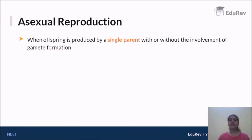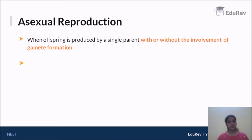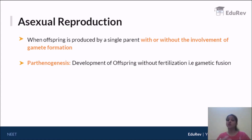Now let's understand something more about asexual reproduction. At the beginning, we spoke about asexual reproduction as formation of offspring from a single parent, but we left the second part of the definition — 'with or without the involvement of gamete formation' — which means sometimes asexual reproduction takes place with the formation of a gamete. All the types of asexual reproduction we have studied so far did not involve gamete formation. However, we now come across a type called parthenogenesis, which requires gamete formation but the gamete does not undergo fertilization — development of offspring without fertilization.